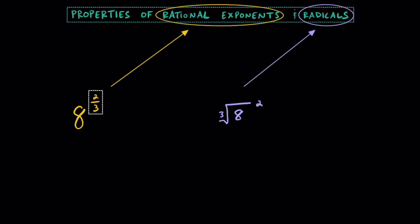It turns out that these two expressions are equal to each other. The value for each of these expressions, whether it's in rational exponent form or in radical form, is going to be equal to 4. If this is the type of concept that you're working on right now, you're going to want to keep watching this video.